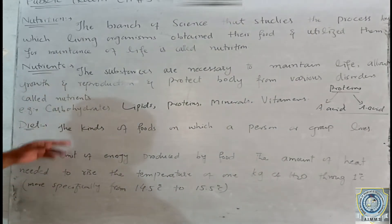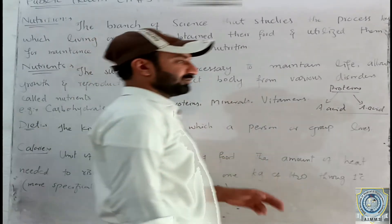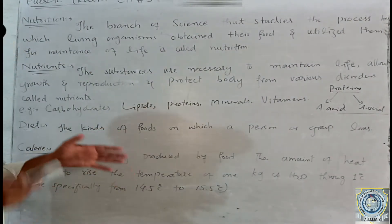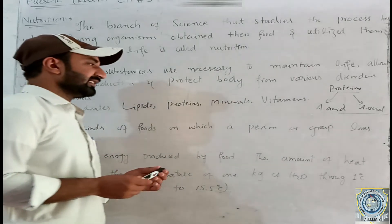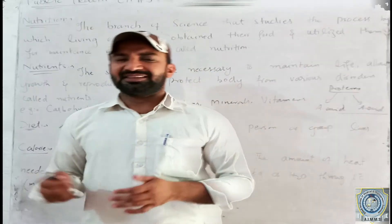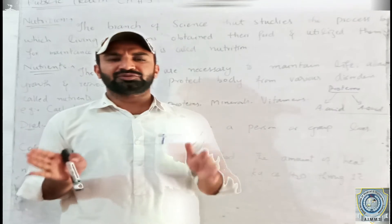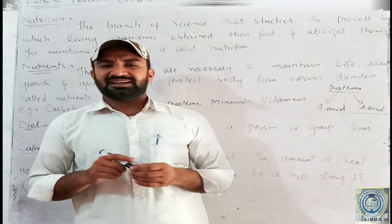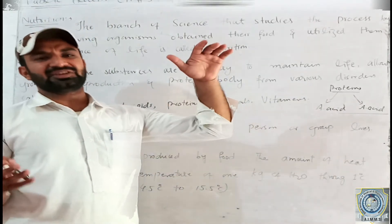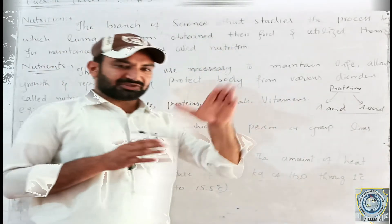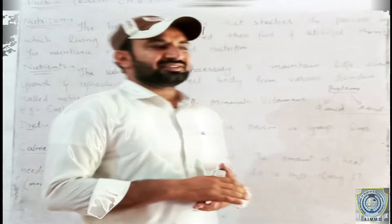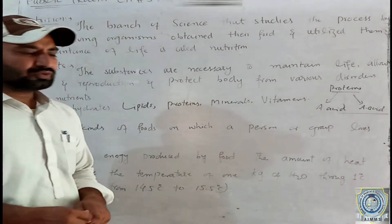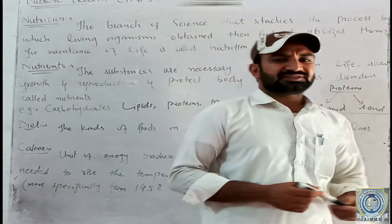The diet is the kinds of food on which a person or group habitually lives. Diet refers to the type of food that a person or group consumes regularly.